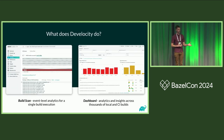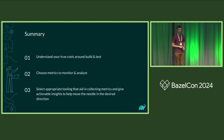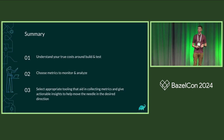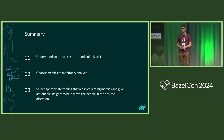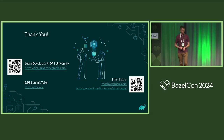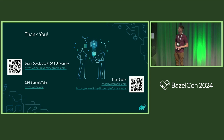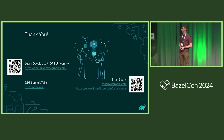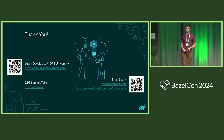We have build scans to show you event-level analytics for a single build, as well as dashboards. In summary: understand your true costs around build and test, choose metrics to monitor and analyze, and select appropriate tooling that can collect those metrics and give you the actionable insights you need. If you're interested in other developer productivity topics, check out talks from the DPE Summit posted at dpe.org — shameless plug number three — and we have free classes available at DPE University about DevLocity. My name is Brian Sege, thank you very much.